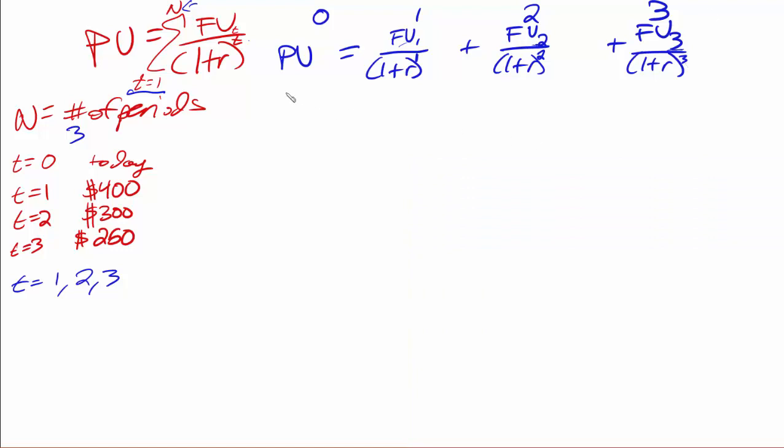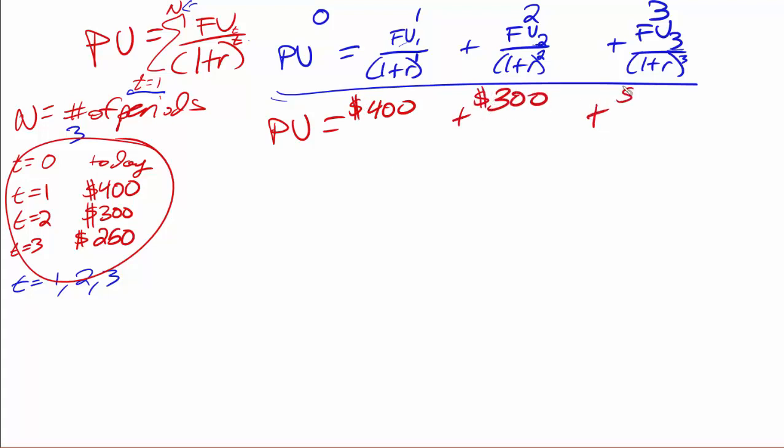So since we set it up in this manner here, we can go ahead and write it out using the numbers that were provided to us. So our present value of these three cash flows is going to be equal to $400 in time period 1, plus $300 in time period 2, plus $250 in time period 3. Now, all of these have to be discounted because we're not receiving $400 for another year. We're not receiving $300 for two years. We're not receiving $250 for three years.